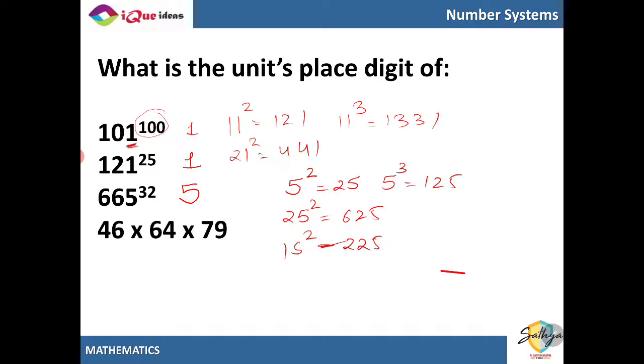Now for this number 46 into 64 into 79 we only are concerned with the units place. So 6 into 4, 6 fours are 24. So 24 units place 4, 4 into 9, 4 nines are 36. So the units place digit here is 6. So we take only the units numbers and multiply them to get the units place digit of the final product.